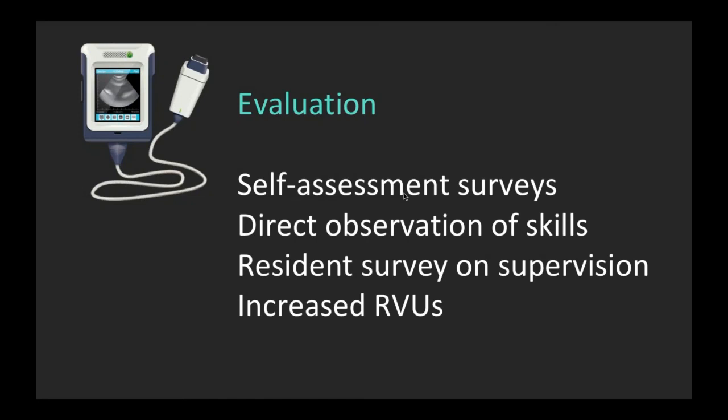For our evaluation, it may be helpful to consider a number of areas. We might look at self-assessment surveys, we might directly observe faculty skills, but we might also look at resident surveys on the quality of their supervision. We can even look at department level effects, such as are we getting increased RVUs from documented and appropriate supervision. After this evaluation, all of these points of information can then inform a new general needs assessment. Have we changed the current process adequately such that we can look at a new problem, or do we need to change the outcome we're measuring? This feeds into the iterative process of curriculum development.